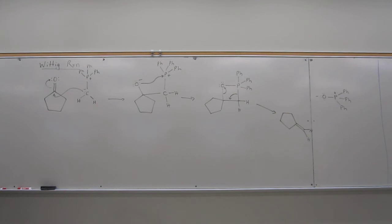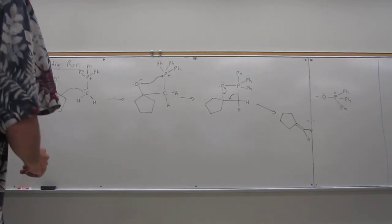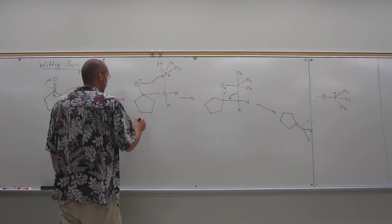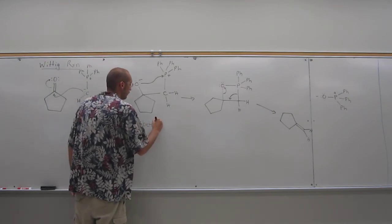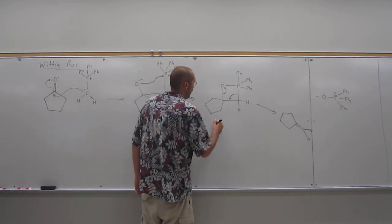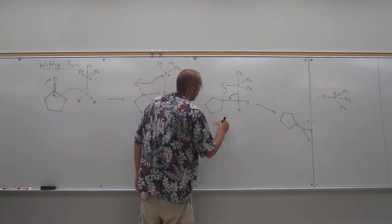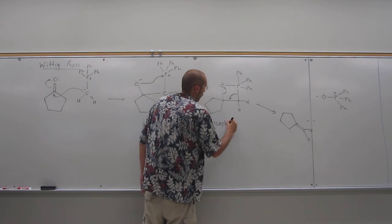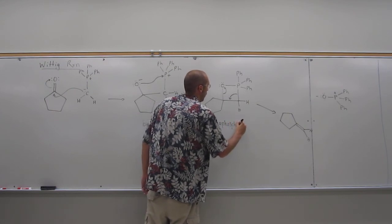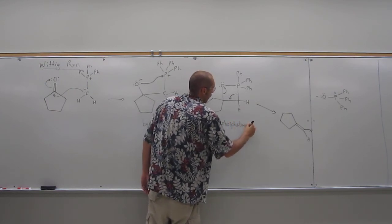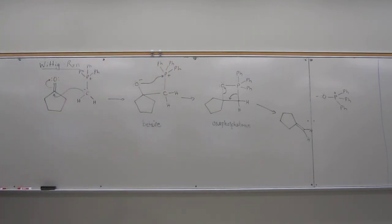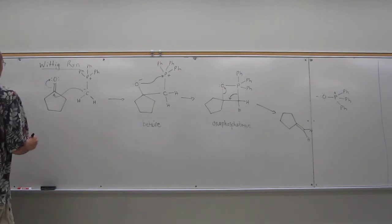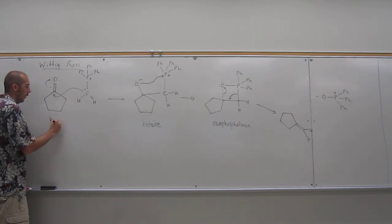Are there any questions from this one? So I think they call this structure the betaine structure. And this is the one more important, the oxyphosphatane. So again, this is a cool synthesis because you can take a ketone or aldehyde.